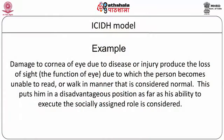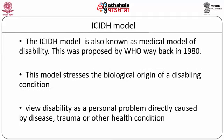As an example, damage to the cornea of the eye due to disease or injury produces loss of sight, which is the function of the eyes, due to which the person becomes unable to read or walk normally. This puts him in a disadvantageous position regarding his ability to execute the socially assigned role. This consequence of disease and disability is known as the ICIDH model, proposed by WHO in 1980 and also known as the medical model of disability.